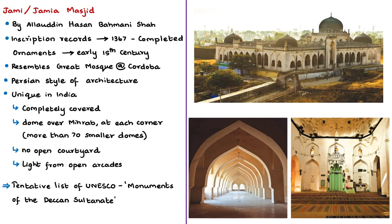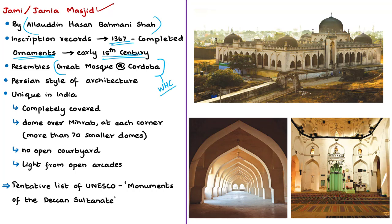Now let us discuss the great mosque in the fort. This great mosque is the Jami Masjid or Jamiya Masjid, erected in the fort by Alauddin Hasan Bahmani Shah, the founder of the Bahmani dynasty. According to some inscription records, the Jami Masjid was completed in 1367, but aspects of its ornamentation suggest it was completed in the early 15th century during the reign of Firusha. There is a contradiction regarding when this masjid was completed. The plan of the Jami Masjid is said to resemble the great mosque at Cordoba, which is a World Heritage Site.